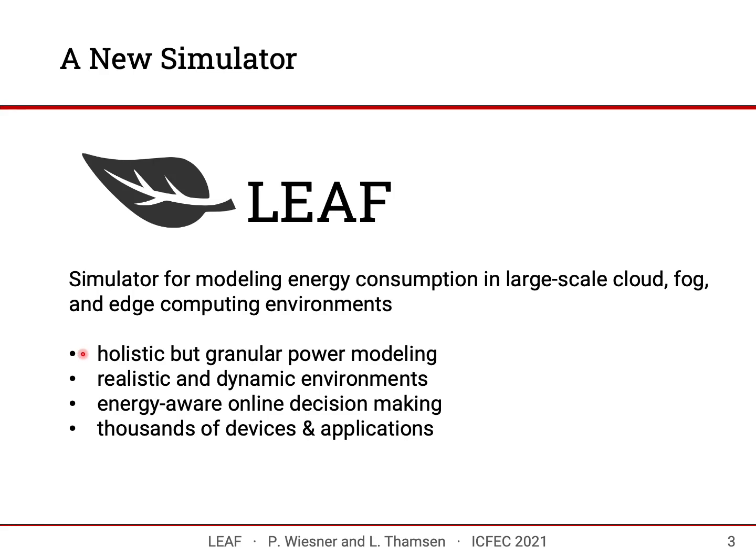LEAF features holistic but granular power modeling, meaning all parts of the infrastructure — including sensors, fog nodes, data centers, and the energy consumed by networking between nodes — can be modeled. LEAF can also derive the energy consumption of applications running on this infrastructure. The model supports realistic and dynamic environments where nodes and applications can join or leave at any time, nodes can be mobile, and bandwidth can change. LEAF also allows implementation of energy-aware algorithms and hardware that adapt their behavior depending on system state and energy usage.